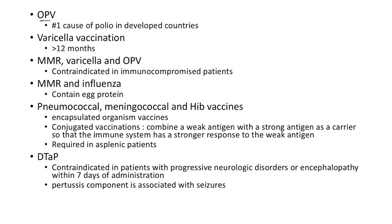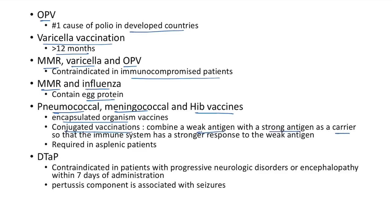Vaccine notes: OPV is the number one cause of polio in 12 countries, so those countries give IPV. Varicella vaccination only for children above 12 months. MMR, MMR-varicella, and OPV are contraindicated in immunocompromised patients as these are live vaccines. MMR and influenza contain egg protein — use cautiously with egg allergy. Pneumococcal, meningococcal, and Hib vaccines are conjugated vaccines used against encapsulated organisms; required in asplenic patients. DTP contraindicated in progressive neurologic disorders or encephalopathy within 7 days of administration.